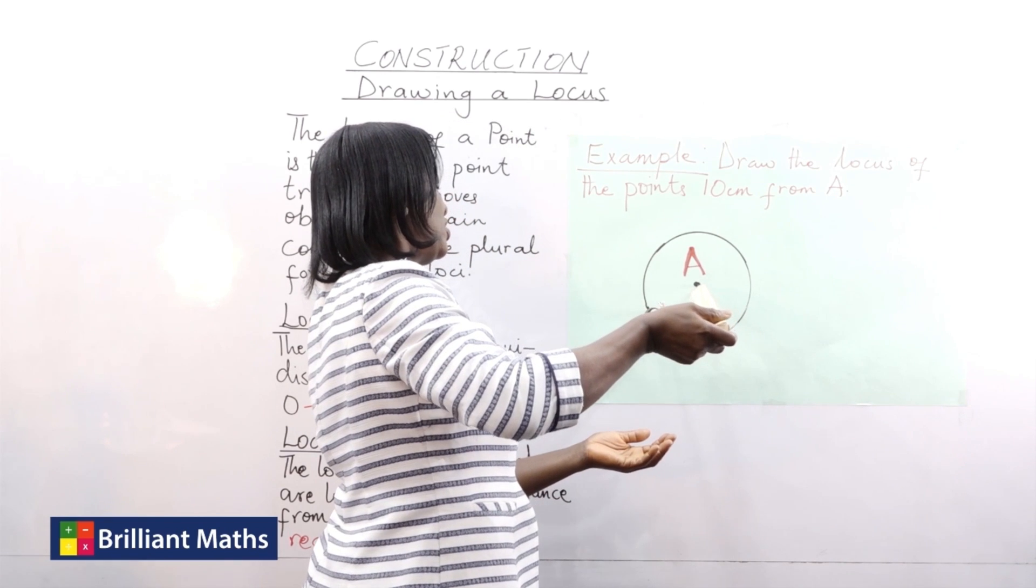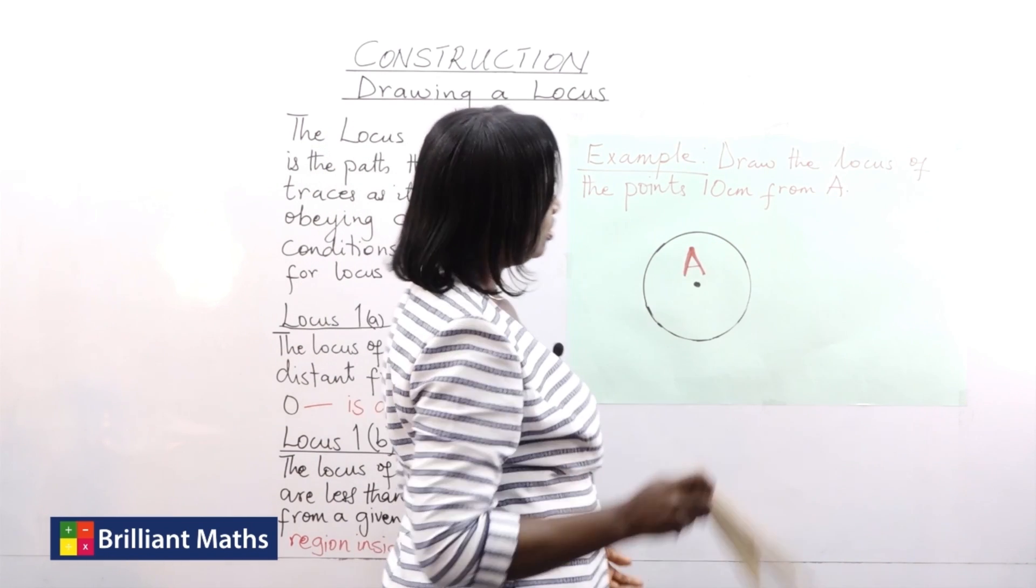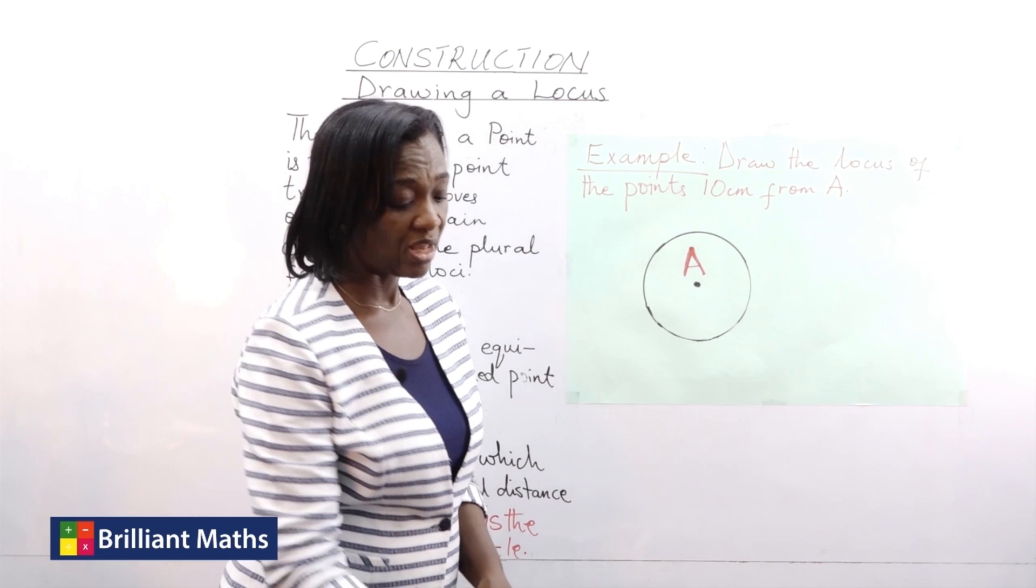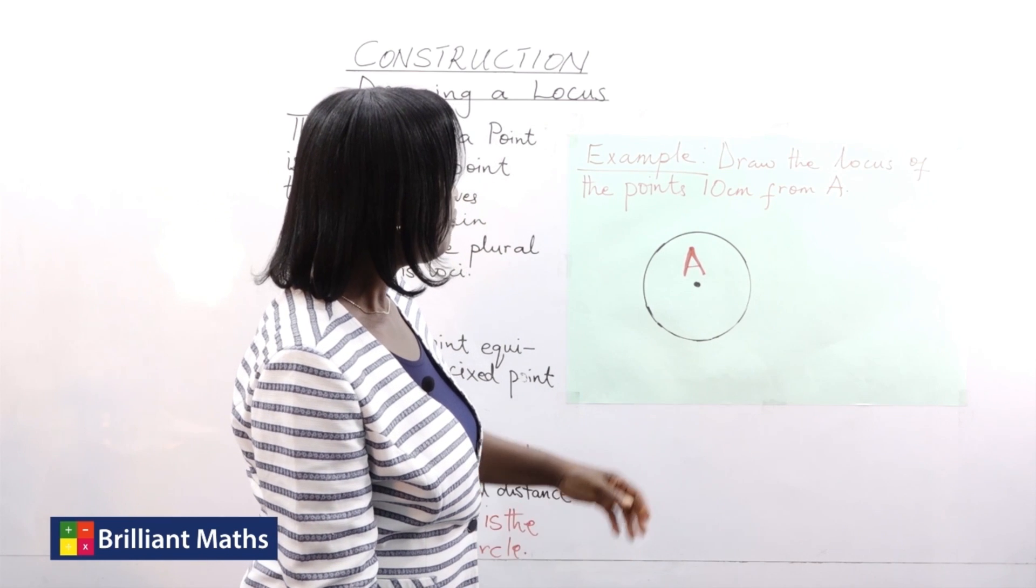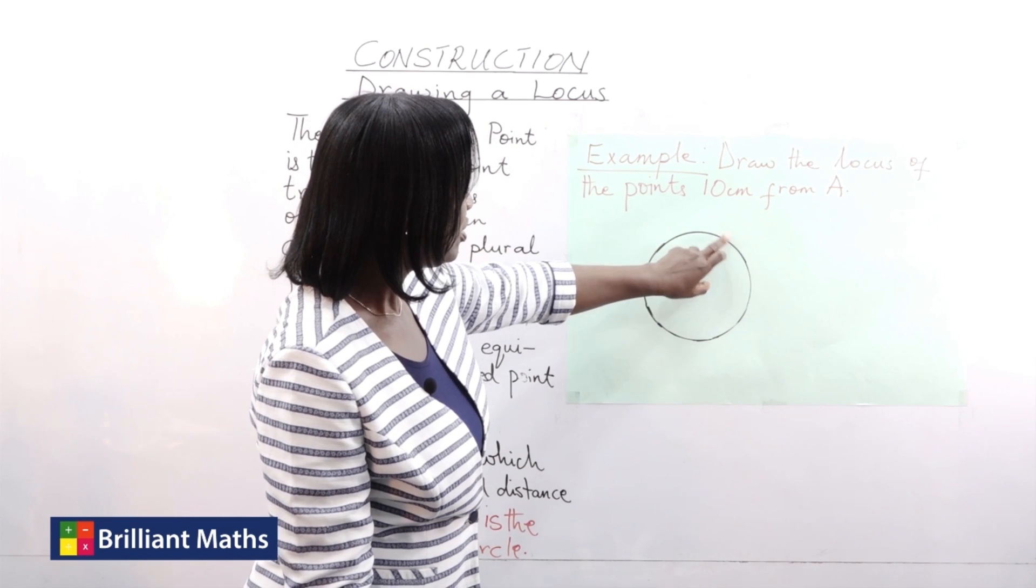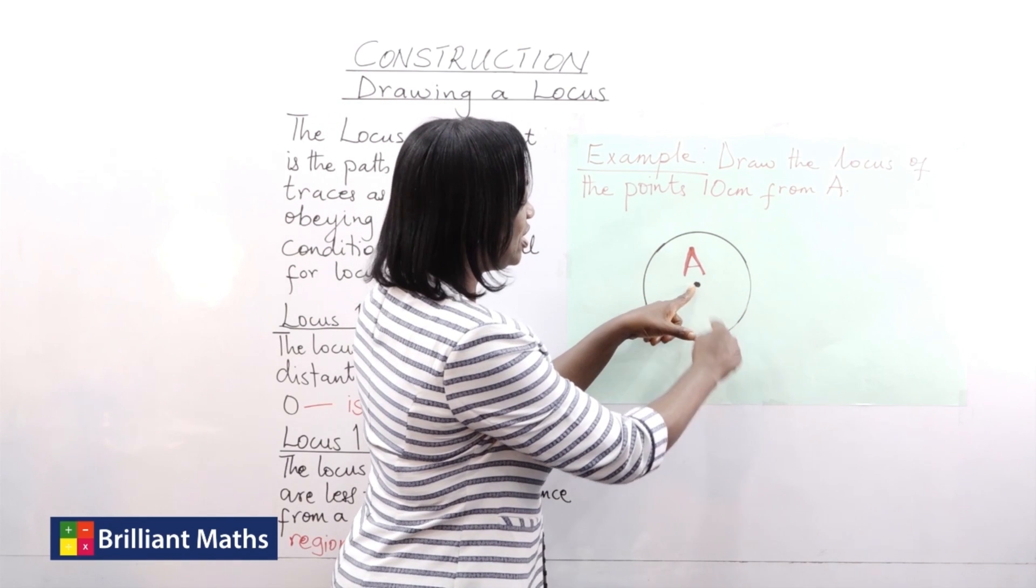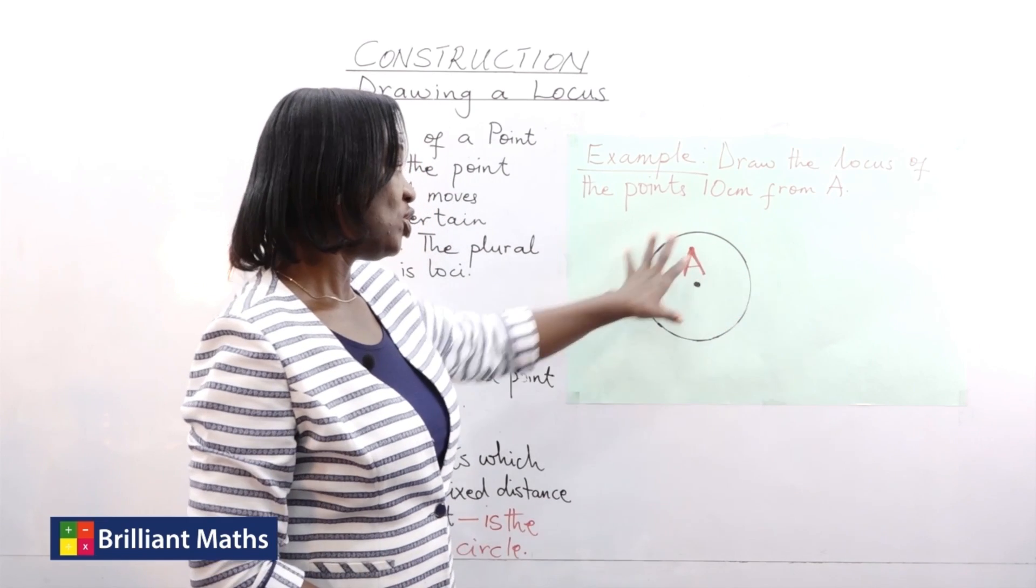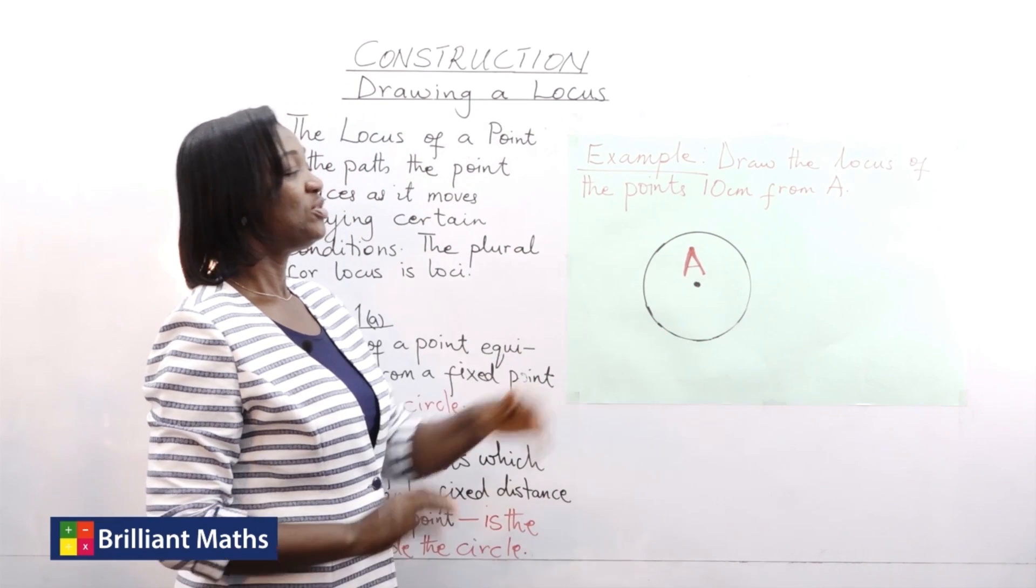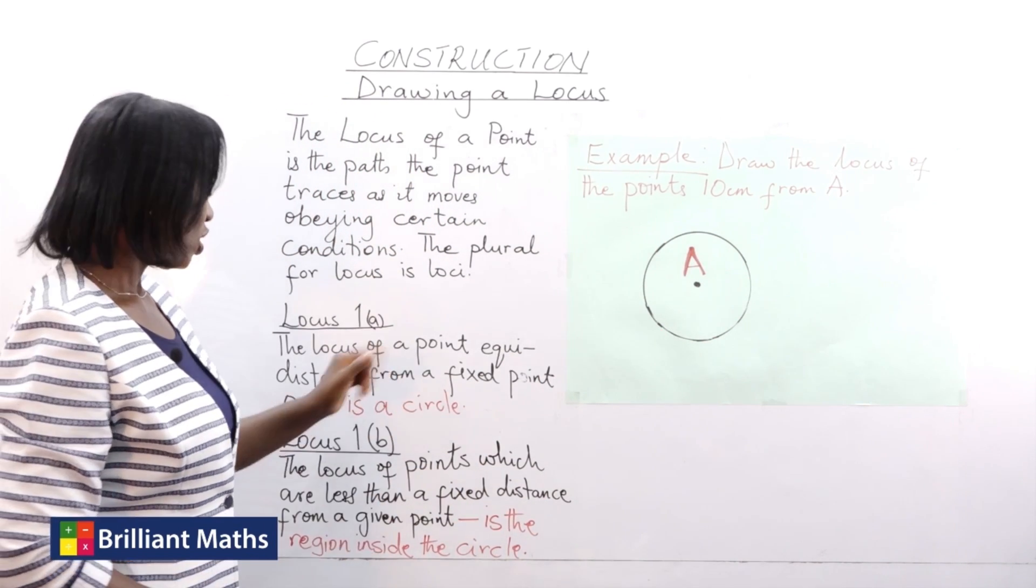With your pair of compasses it's much easier. So that locus is a circle. Every point on this circumference is 10 centimeters away from point A. So that's the locus of the point 10 centimeters from A.